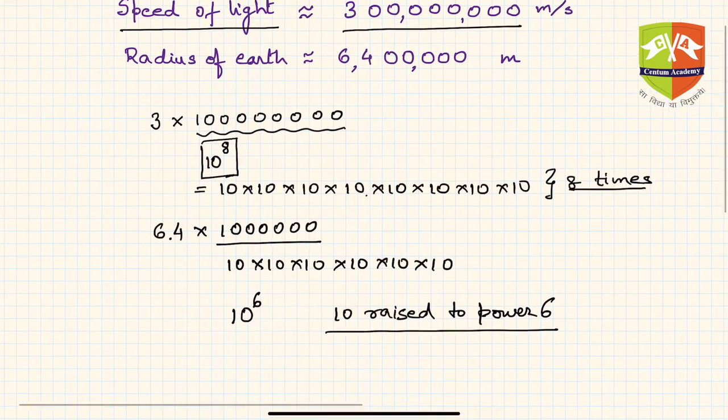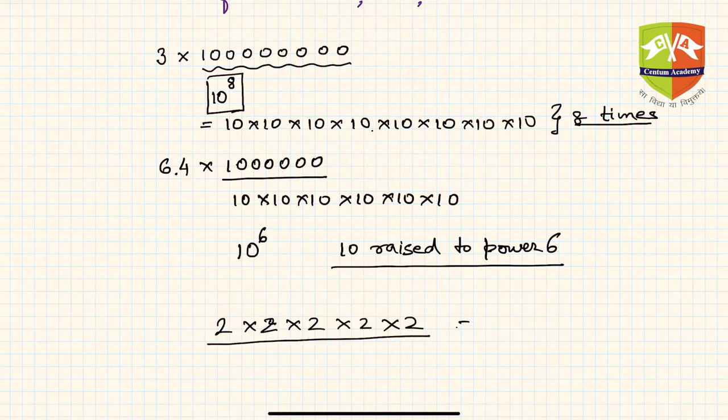So any number, let's say 2, when multiplied 5 times - 2 times 2 times 2 times 2 times 2 - can be written as 2 raised to the power 5.